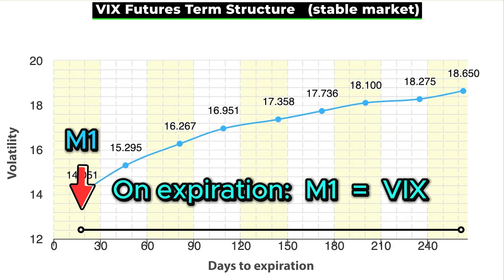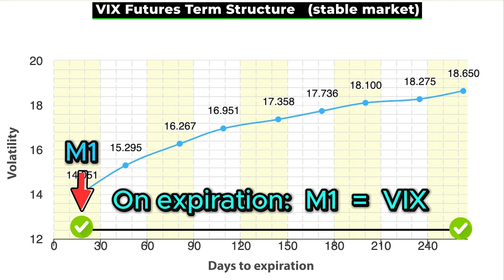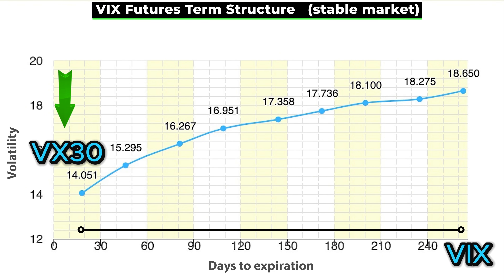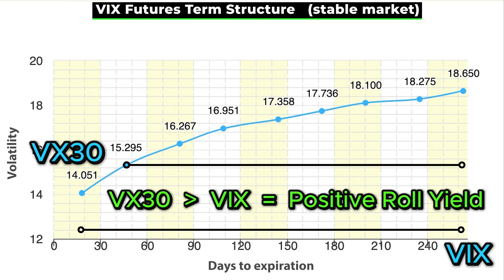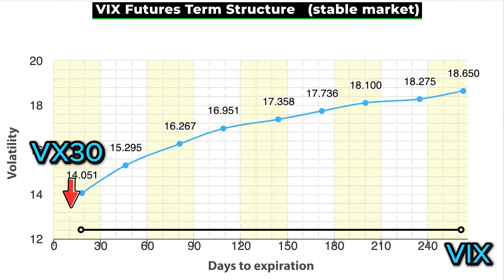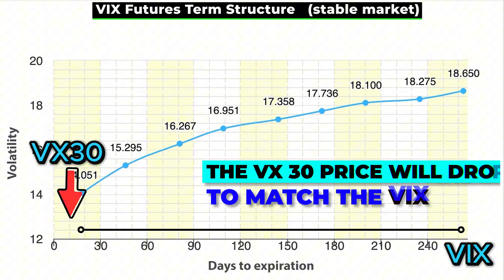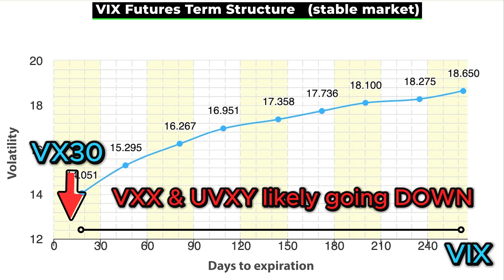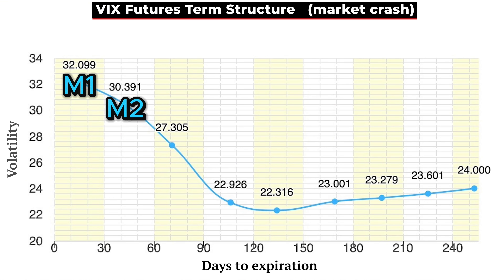Let's add another detail that will crystallize this for you. On expiration day, just for that one day, the M1 VIX future will converge to the spot VIX index price and they will be the same value. This means it really does matter where that VX30 is in relation to the VIX index. If VX30 is above the VIX, I call that positive roll yield. And if that situation persists for a while, as it does in a stable market, then there's a high probability VX30 will converge down to meet the VIX index — and if VX30 goes down, long volatility products like VXX and UVXY will go down with it.